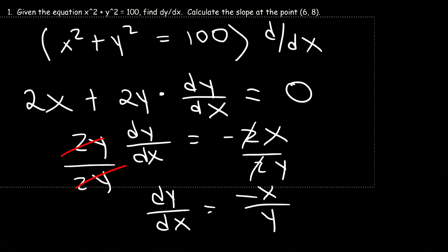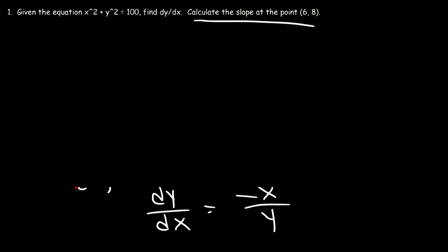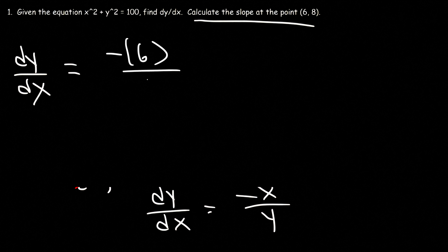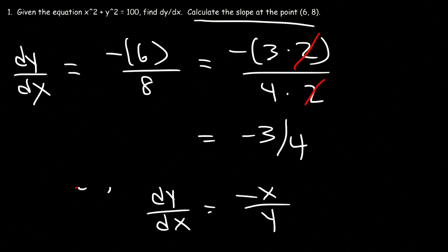Now that we have dy/dx, we can move on to the second part of the problem: calculate the slope at the point (6, 8). So let's evaluate dy/dx at that point. x is 6 and y is 8. We need to reduce this fraction. 6 is 3 times 2 and 8 is 4 times 2, so we can cancel a 2. So dy/dx is equal to negative 3 over 4 at the point (6, 8).